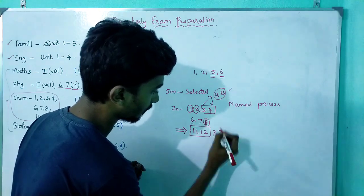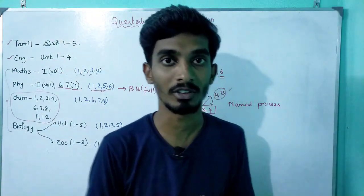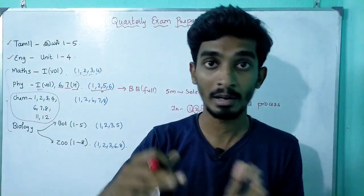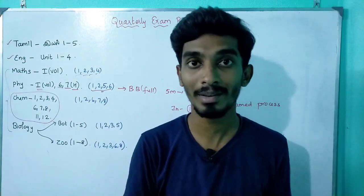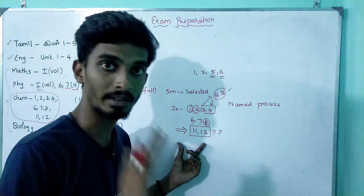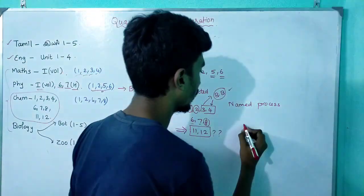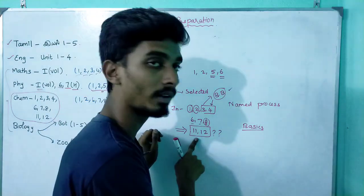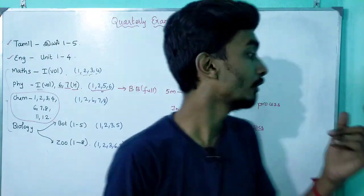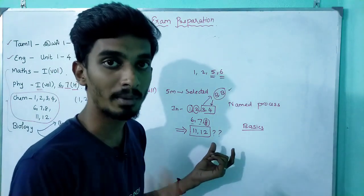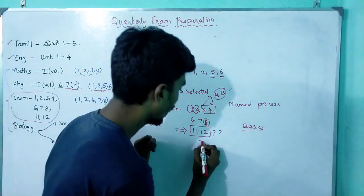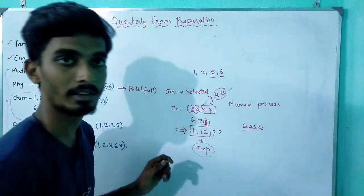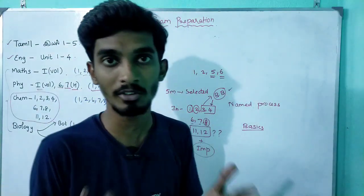For organic chemistry — chapters 11 and 12 — finish the book back. Topics include hydroxy compounds and ethers, carbonyl compounds and carboxylic acid. There is already a reduced syllabus, but we will cover the full basics. For chemistry overall, we will cover everything and upload lecture videos.